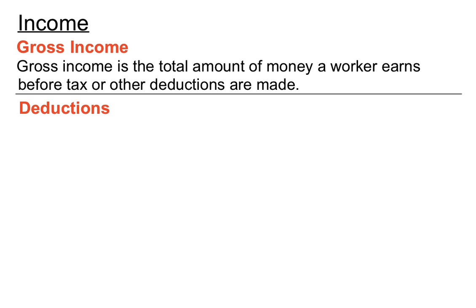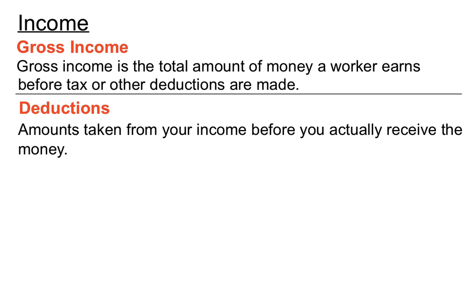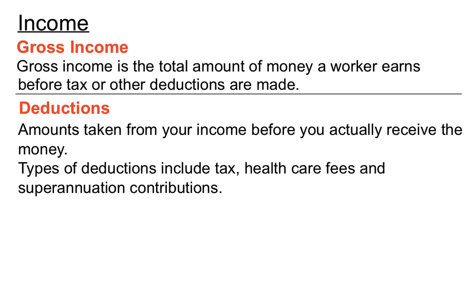Those deductions that we're talking about — these are amounts of money taken from your income before you actually receive the money. Such deductions include tax, healthcare fees if you've got private health insurance or Medicare fees, and superannuation contributions, particularly in Australia. We have some superannuation money that goes in a compulsory way to your superannuation account out of your gross income. So you might be paid a certain amount, but you don't get to spend that whole amount — these deductions need to be taken out of that gross income.